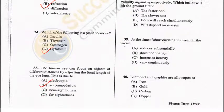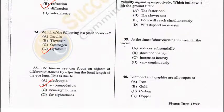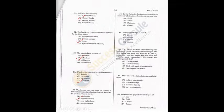Question 39: At the time of short circuit, the current in the circuit increases heavily — C is the correct answer. Question 40: Diamond and graphite are allotropes of carbon — C is the correct answer. To recap: Q36 = A, Q37 = B (photon), Q38 = C, Q39 = C, Q40 = C (carbon).